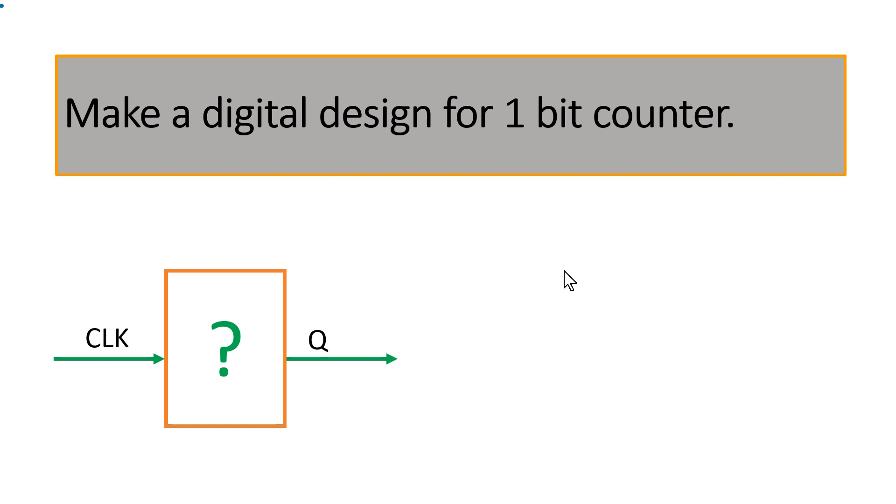And the answer of this question is very simple, may be known by many of you. So you simply have to use one flip-flop and output of this flip-flop you have to feed to the input of D through an inverter. And with this the output will keep on toggling 0 1 0 1 and this is what is one bit counter.